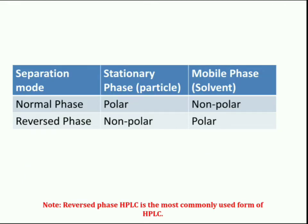In summary: in normal phase chromatography, the stationary phase used is polar while the mobile phase used is nonpolar in nature. In reverse phase chromatography, the stationary phase used is nonpolar and the mobile phase used is polar in nature.